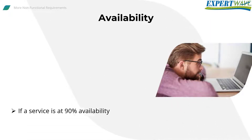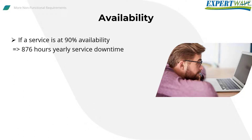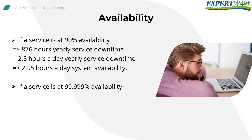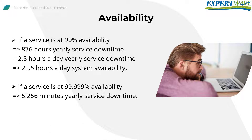For instance, if a service is at 90% availability, the yearly service downtime could be as much as 876 hours, so you could expect the system to be down almost 2.5 hours a day — or in other words, the system will be available and up and running 22.5 hours a day. For 99.999% availability, the famous five nines, the yearly service downtime could be as much as 5.256 minutes.